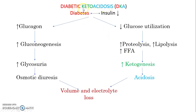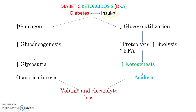In diabetic ketoacidosis, as the name suggests, there is decreased insulin release and secretion, and because of this, there is an increased level of glucose in the body. Because of that, the person is known as suffering from diabetes. So, decreased insulin release causes a condition called diabetes.